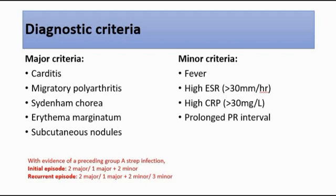Whereas if this is a recurrent episode, we either need two major criteria, or one major plus two minor criteria, or three minor criteria is sufficient to diagnose acute rheumatic fever. For evidence of preceding group A strep infection, it includes the patient having a history of scarlet fever, or a positive throat swab for group A strep, or the antistreptolysin O titer (ASOT) is raised.